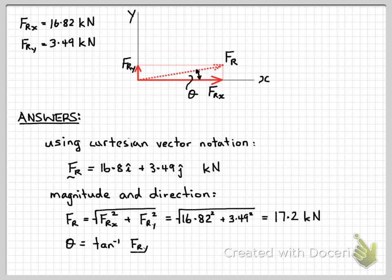The angle is the inverse tan or arctan of the opposite over adjacent, so FRy over FRx. That gives us an angle of 11.7 degrees. We just indicate the direction with a little diagram next to our answer, that that angle refers to anti-clockwise relative to the x axis.